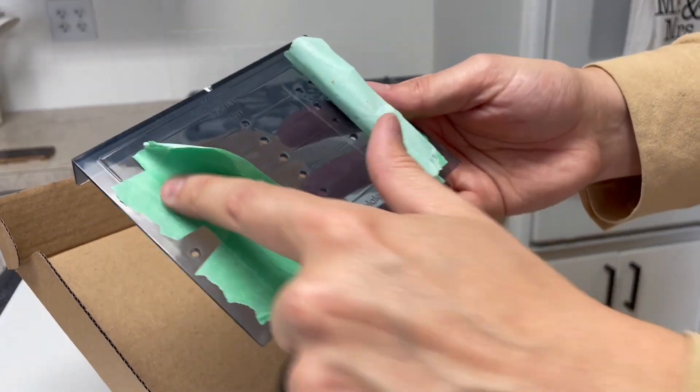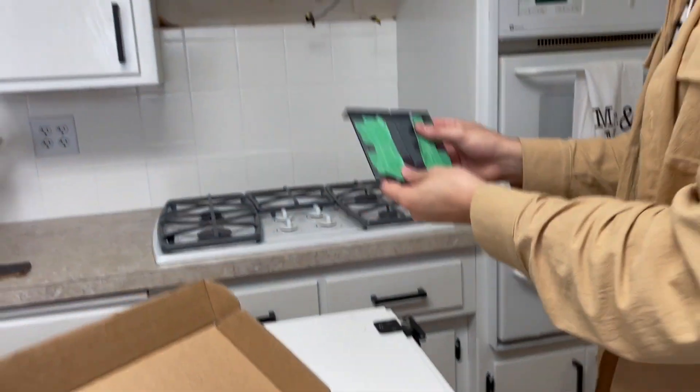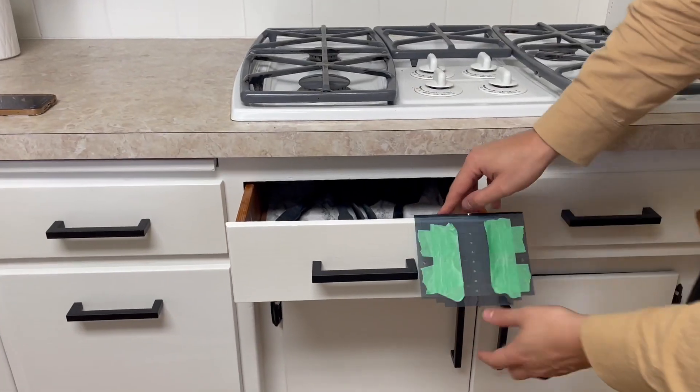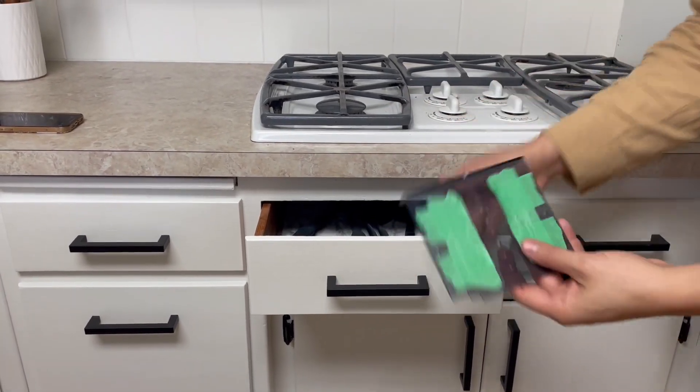Same thing, so I taped off all the holes I'm not using just to make it dummy proof so I can't make a mistake. But with the drawers, you do have to find center of the drawer yourself against the drawer like so, and then you would mark your marks with pencil as I did here and then drill through.